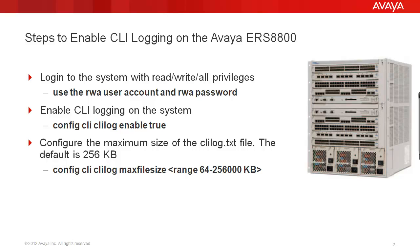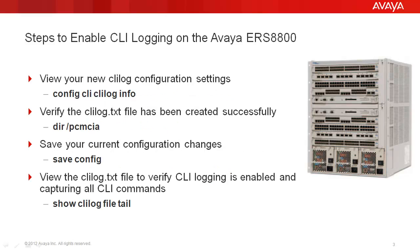In our example, we'll use the default, which is 256K bytes. We'll view our new CLILog configuration settings using the CLILog info command. We'll verify the CLILog.txt file has been created successfully by viewing the contents of the PCMCIA file system. Next, we'll save our current configuration changes using the save config command.